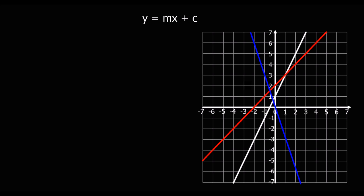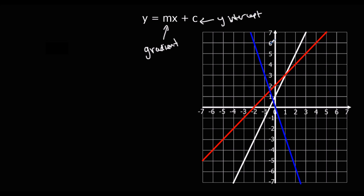This video is about the equation of a straight line. The equation of a straight line is in the form y equals mx plus c. m is the gradient — that's how steep the line is: for every one it goes across, how much does it go up or down. c is the y-intercept — that is where the line crosses the y-axis.